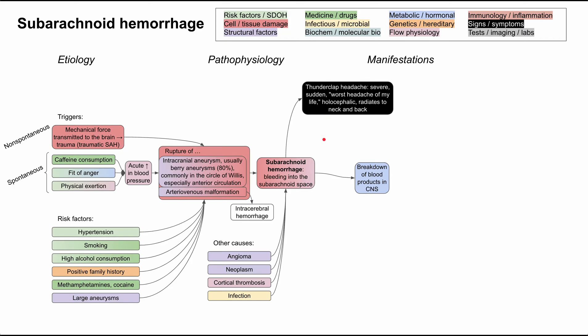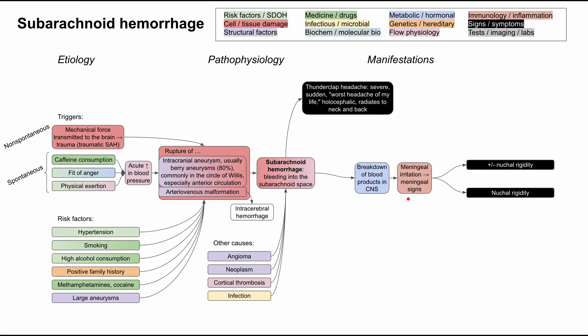We can break down other symptoms based on how they're caused by the blood itself. Blood products in the central nervous system are broken down — just like a bruise changes color as your body reabsorbs it. These blood products cause irritation to the meninges, producing meningeal signs. The classic meningeal sign is nuchal rigidity: the neck is stiff and painful to move. Symptoms are placed in a specific order because we'll be ranking them by a classification system.